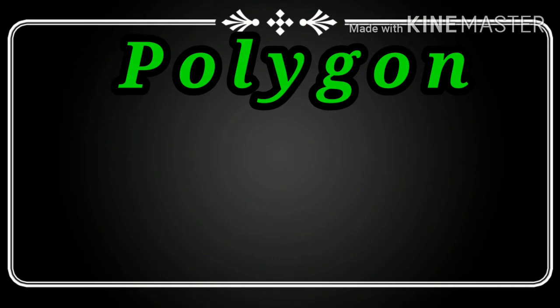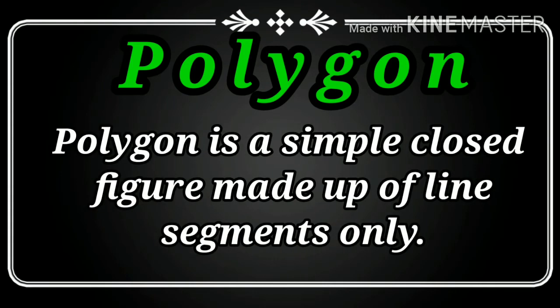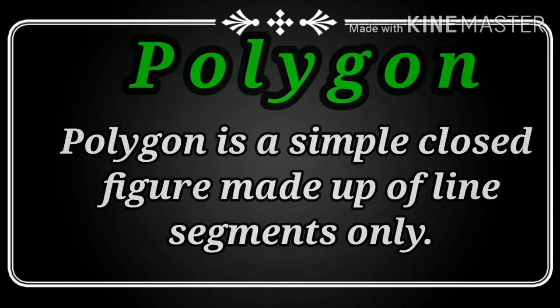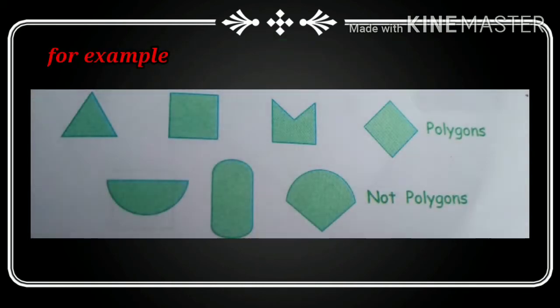Now let us learn about polygons. A polygon is a simple close figure made up of line segments only. You can see the shapes. The first four shapes are made up of line segments, so these are polygons. But the next three are not polygons. Why? Because they have curves.